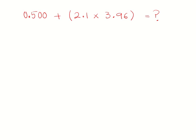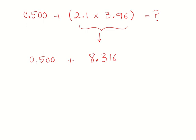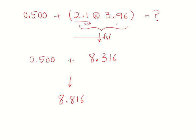Alright: 2.1 times 3.96 — first step, calculate the parentheses. I calculate that: 8.316. Then plus 0.5000. The total is 8.8160. I already calculated that. Now I go back and look at the sig fig rules. For the multiplication operator, the rule is fewest sig figs: 2.1 has two sig figs, 3.96 has three sig figs — report by two sig figs. I draw a box for two sig figs.